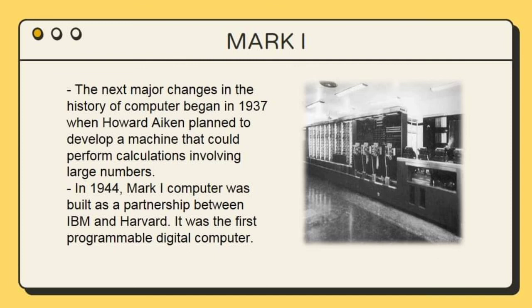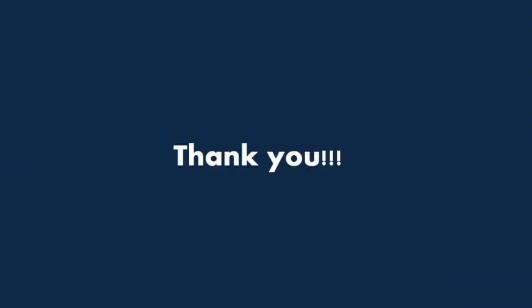The next major change in the history of computers began in 1937 when Howard Aiken planned to develop a machine that could perform calculations involving large numbers. In 1944, the Mark 1 computer was built as a partnership between IBM and Harvard. It was the first programmable digital computer.